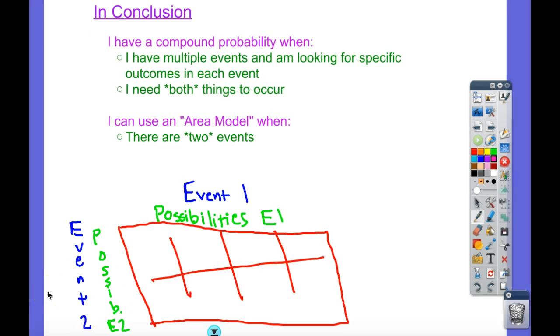So in conclusion, I have a compound probability when I have multiple events and I'm looking for a specific outcome in each event and I need both of those things to occur. That's a compound probability. I can use an area model to find that probability when I have two events, two and only two because this is the only way it works. I can't put a third event over here or anything like that.